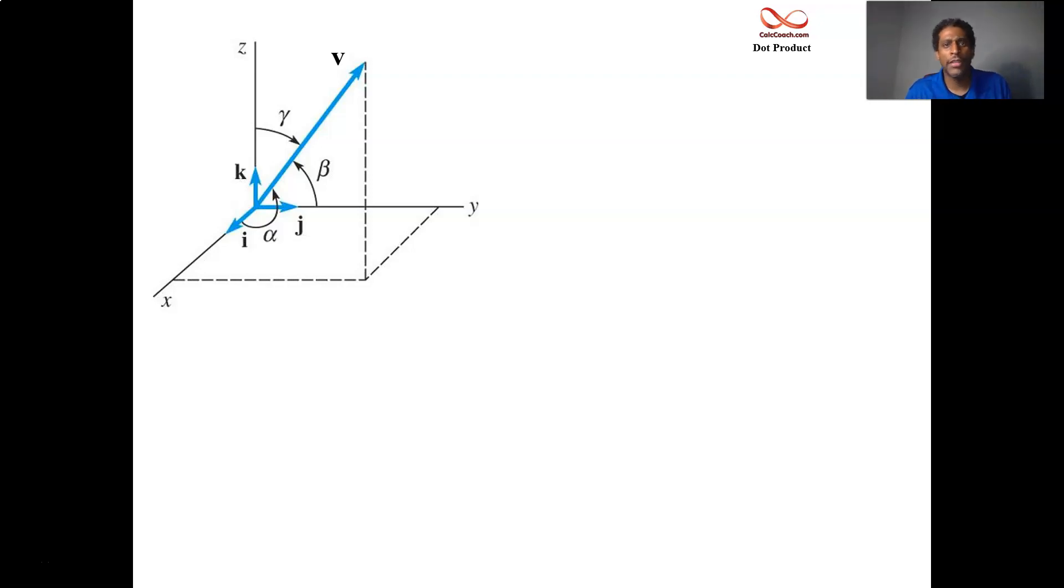You can actually name your vector by the angle that it makes with each of the coordinate axes. Each of the coordinate axes has a unit vector on it. The unit vector along the x-axis is the vector i, the unit vector along the y-axis is j, and the unit vector along the z-axis is k. The angle you make with i, j, and k can be enough to define your vector.